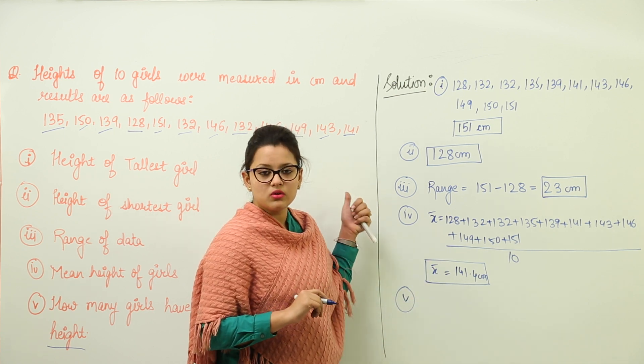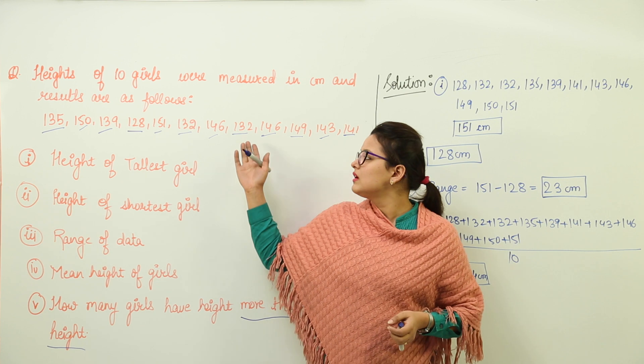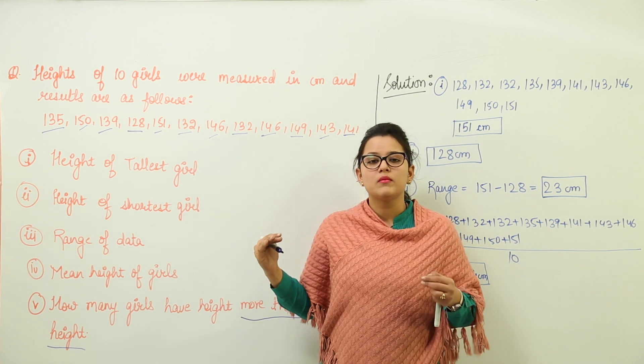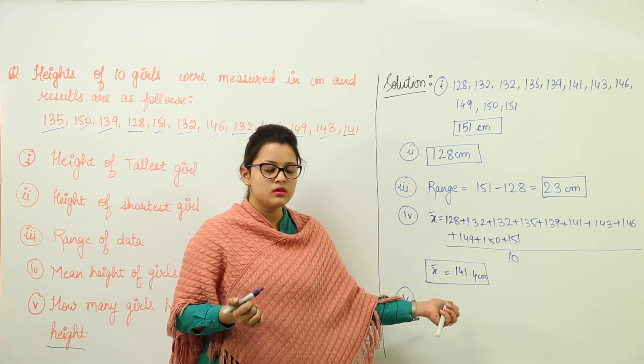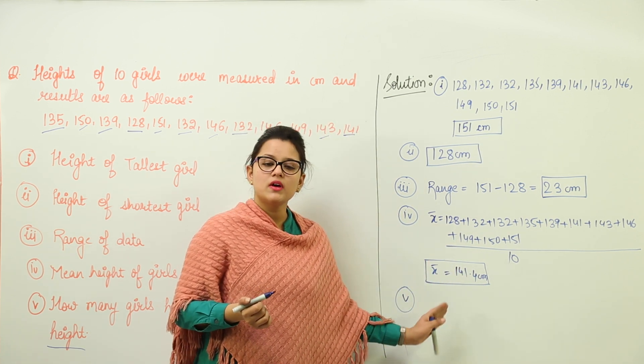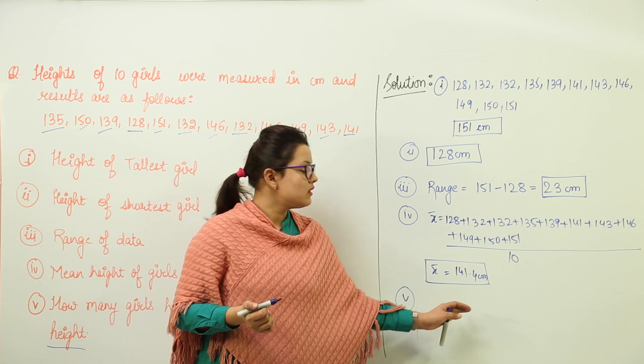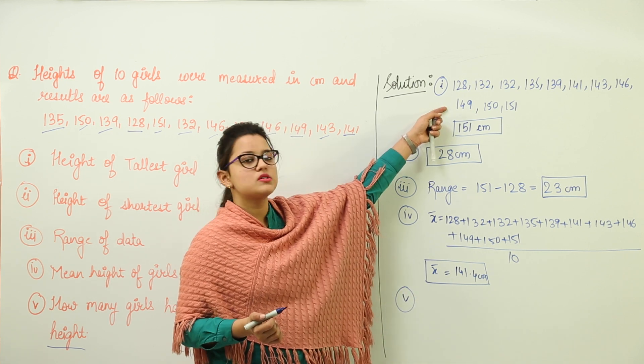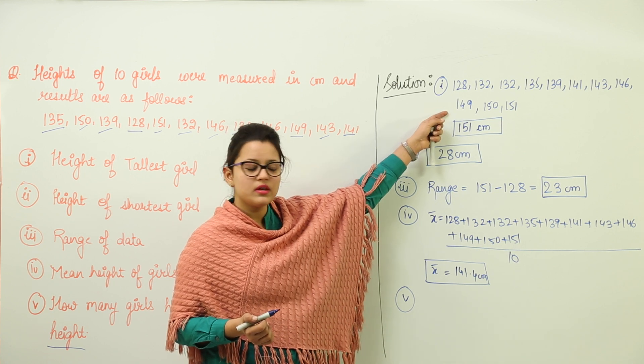You can check in this way also, but here it becomes more difficult because it will be taking a longer time. So what should be done? You can arrange this in increasing order and check which values are going higher than 141.4. But because I have already done that in the first part, I will do it in the same way.